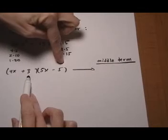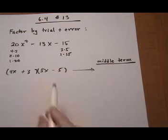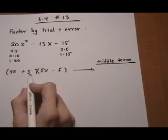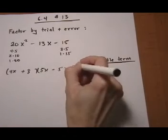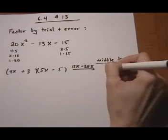So there are a lot of possibilities when you have a negative at the end here. Middle term: 15x minus 20x, so it's minus 5x. Didn't work, so let's keep going.